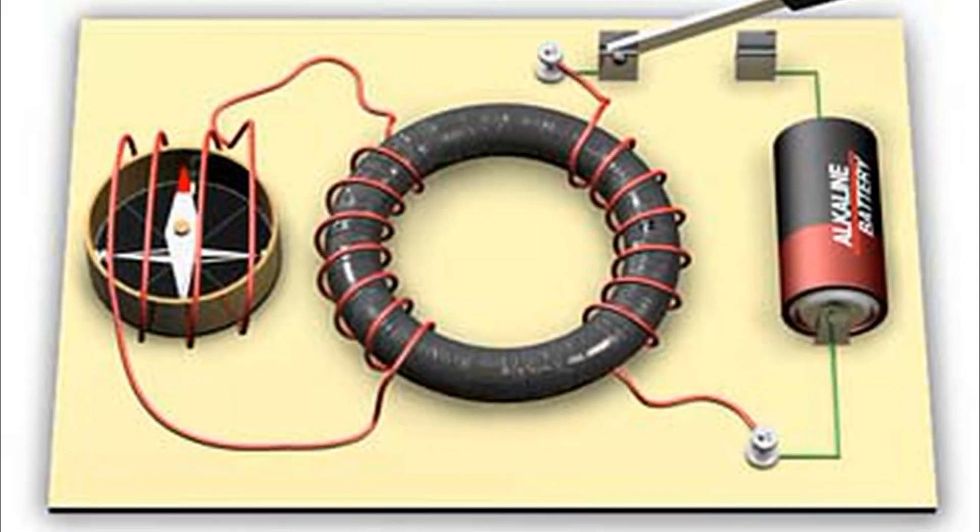Electromagnets. An electromagnet is a magnet in which magnetism is produced because of the flow of electric current through a wire around it.